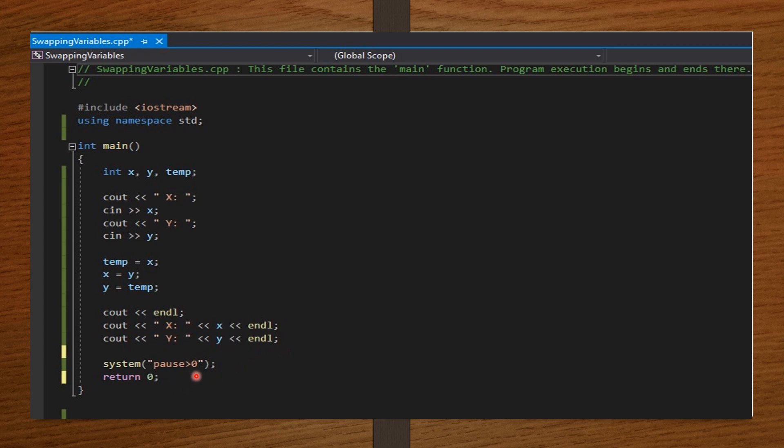Now we have system pause. This system pause will ensure that only the needed information will be displayed when we run our code. Then per custom, we return zero. So now, let's input some values for x and y, and see how our code will run.